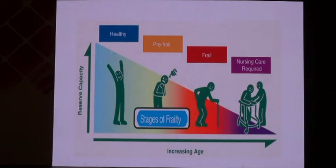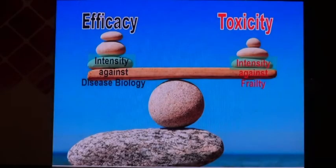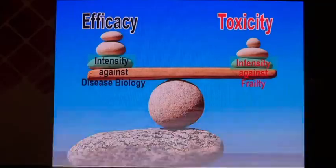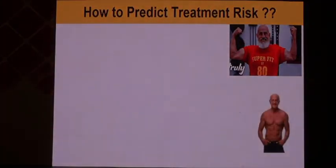You need to look at where your patient is on the fitness spectrum — from the very healthy person to pre-frail, frail, and then to the nursing-care-required patient. The balance of efficacy and toxicity is critical. Intensity is important because it is your weapon against blood cancer, but intensity is also a problem because it brings toxicity in this age group.